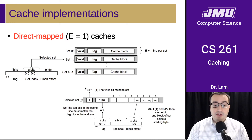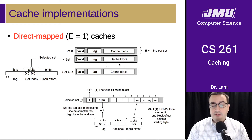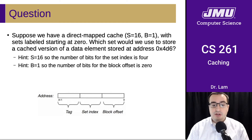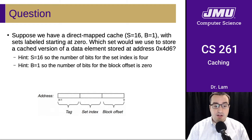We also need to make sure that the valid bit is set. If both of those things are true, then we can read the data out of the cache starting at the block offset. Here's a question: suppose we have a direct mapped cache with sets labeled starting at zero. What set would we use to store a cached version of a data element stored at the address 0x4d6? Here are some hints — pause the video and see if you can figure this out.